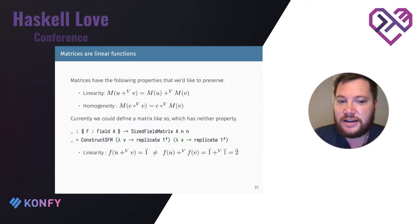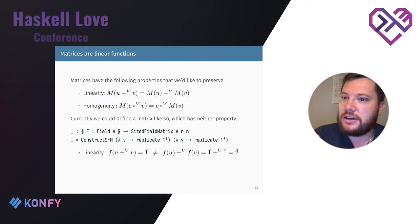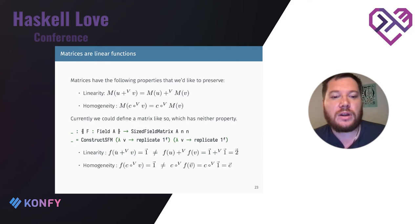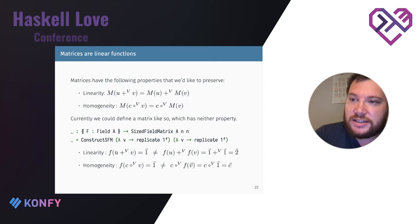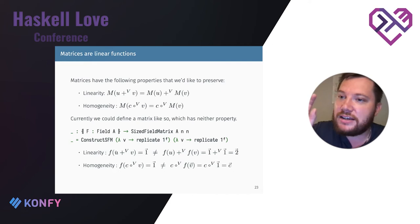Our 'always return ones' constructor fails linearity: applying the function to u+v always gives a vector of ones, but applying to u and v separately and adding gives a vector of twos — they don't match. It also fails homogeneity: multiplying a constant to the vector before applying still gives ones, but applying first gives ones and then multiplying by the constant gives a vector filled with that constant. The two sides don't match.